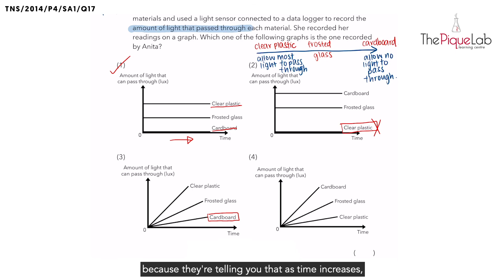They're saying that as time increases, the amount of light that passed through the cardboard would also increase. Do you think that is possible? Have you ever seen a piece of cardboard that you leave on the table, and as time passes, it will allow more and more light to pass through? No. If it's an opaque material, it will remain opaque consistently, and it will always allow no light to pass through. The line should be constant.